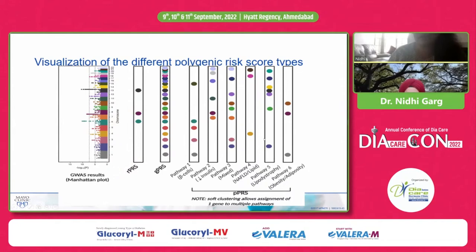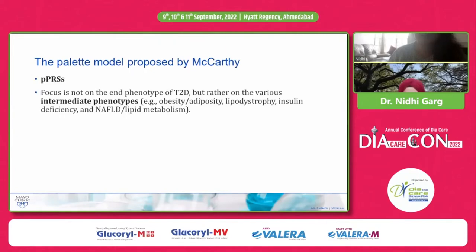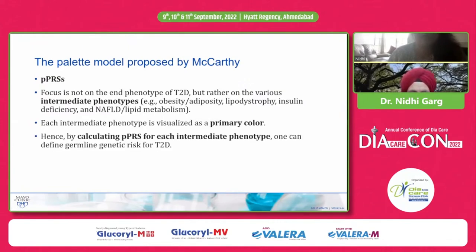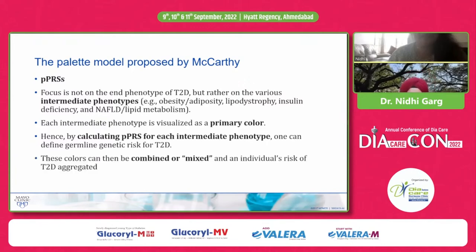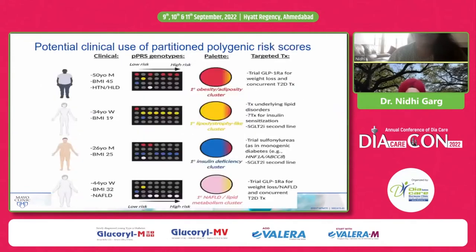Using the partition polygenic risk score, McCarthy proposed the pellet model. In this model, the focus is not on the end phenotype of type 2 diabetes but rather on the various intermediate phenotypes — obesity, lipodystrophy, NAFLD, and insulin deficiency. Each intermediate pathway is visualized by a primary color, and the partition polygenic risk score is calculated for each intermediate phenotype. These colors are combined and the individual's risk of type 2 diabetes is calculated, allowing targeted therapy to be given.